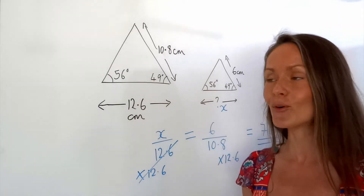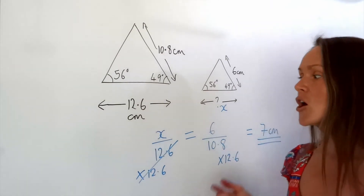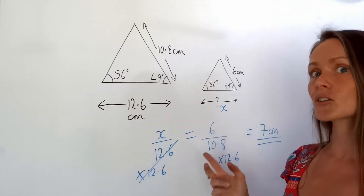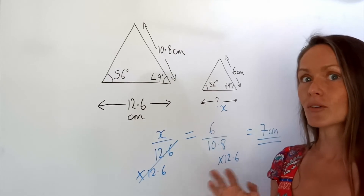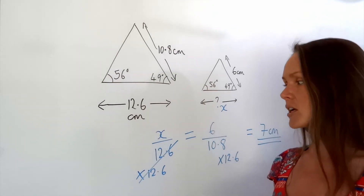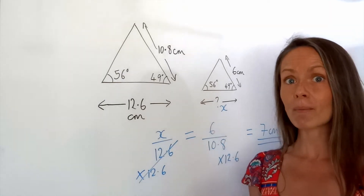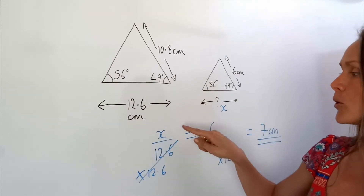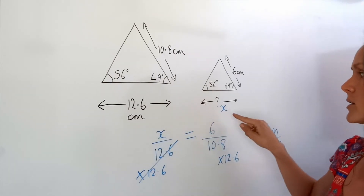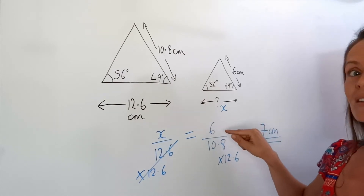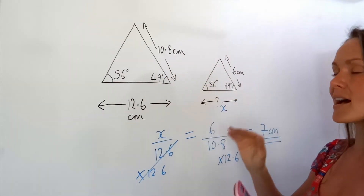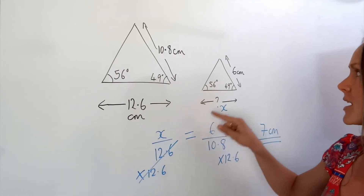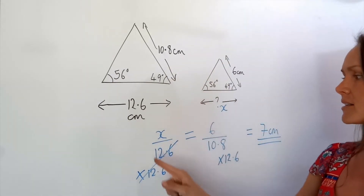Just before I go on to the next example, I want to point something out. Notice how I put the unknown as the numerator — it doesn't actually matter which way round you divide the sides, but it makes your rearranging and solving of the equation easier if you put the unknown as the numerator. Because I've put the small side on top, I have to do the same over here. You can't suddenly start dividing the big by the small — it has to be consistent throughout your equation: small base over big base, and small side over big side.